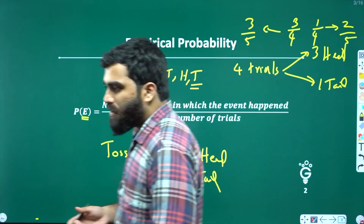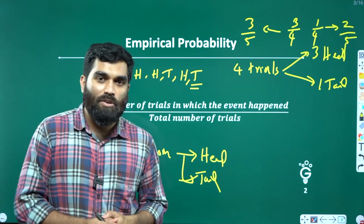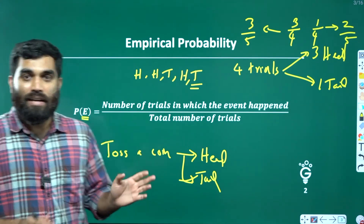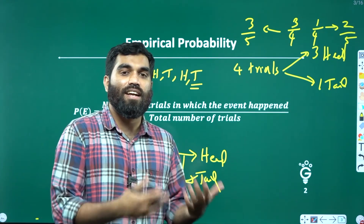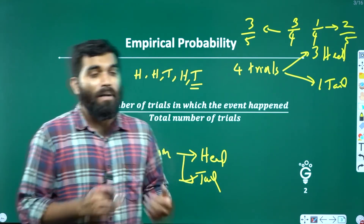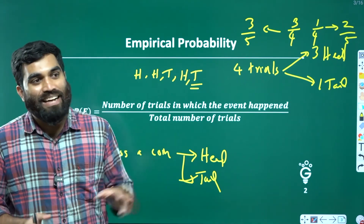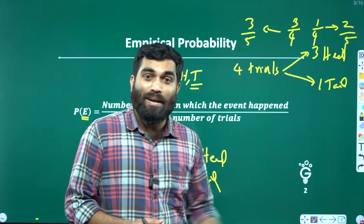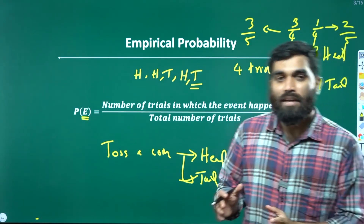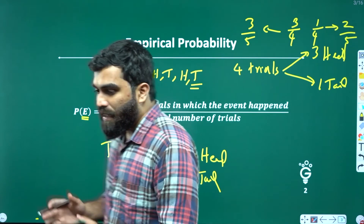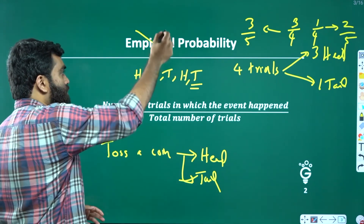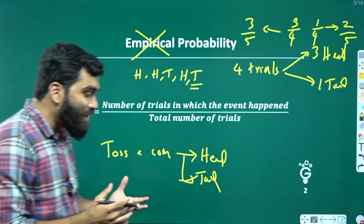In other words, we can always measure how much we can measure probability. We can predict the empirical probability, but we can't always predict the true probability. That's what we're going to say.